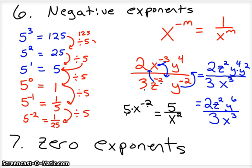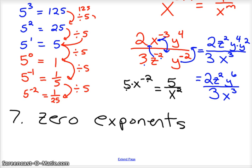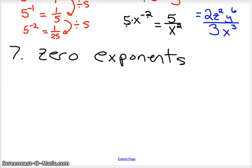Things get complicated when you combine negative exponents with the quotient to a power rule and product to a power rule — that's when things get messy. The last thing in this part two video is zero exponents, which are the most fun rules of exponents.